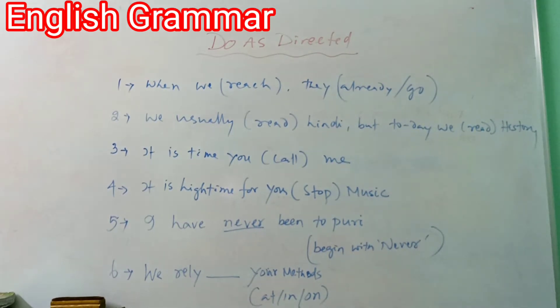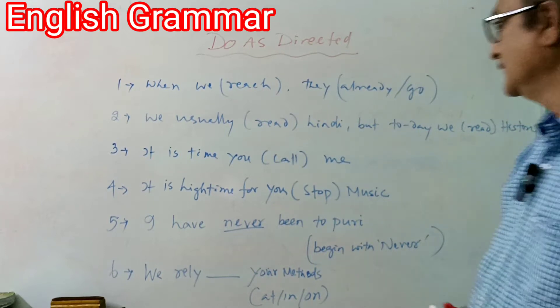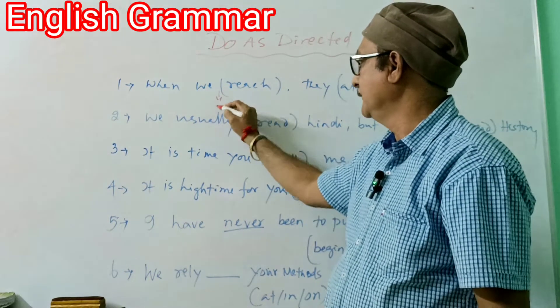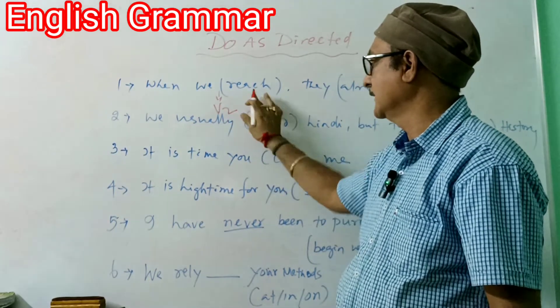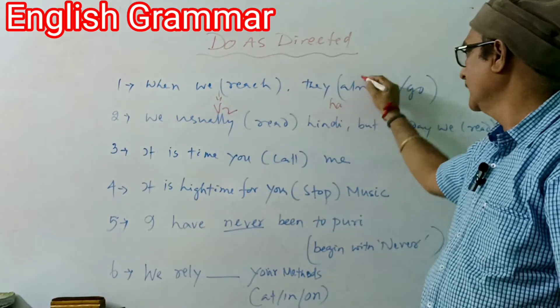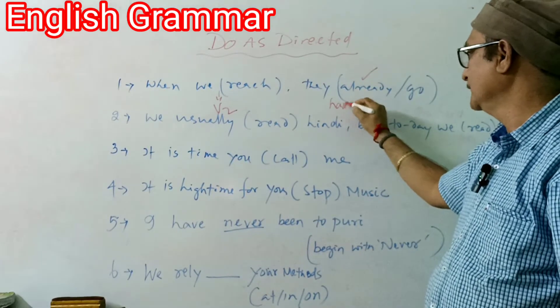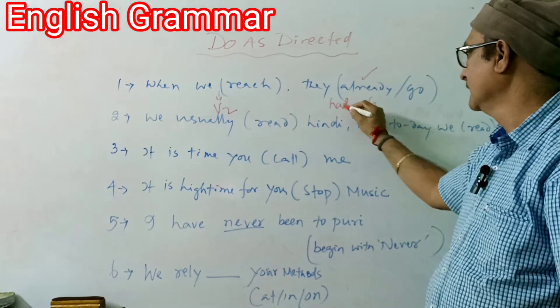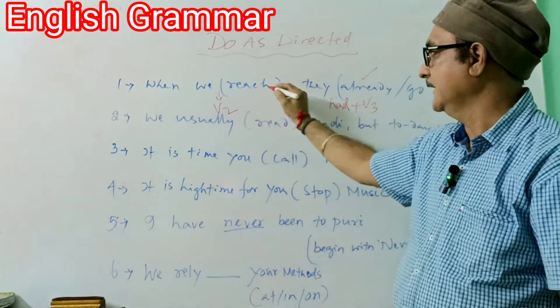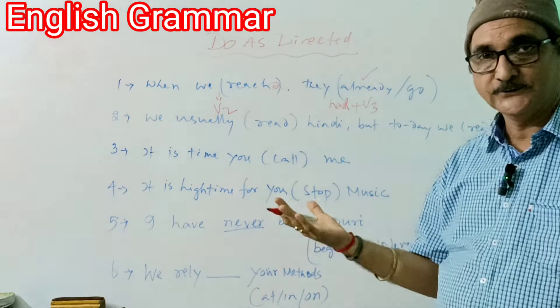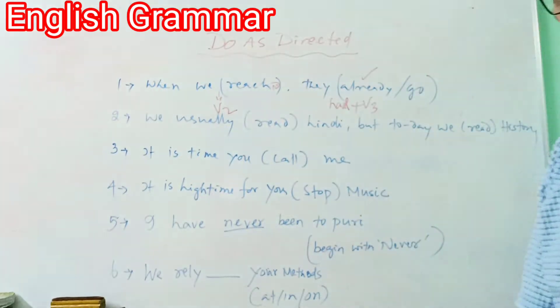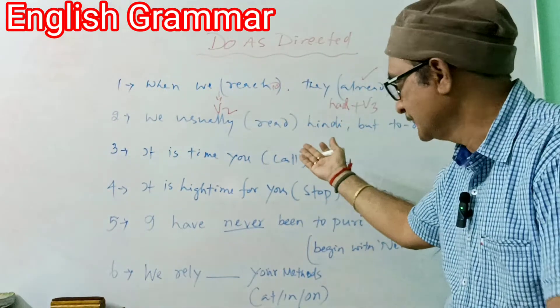When we reach, they already go means they had already gone. Right? Either you can write like this in past, or in present: when we reach, they have already gone. So think, one side you have to mention this side will be past V2 formula 'reached,' and this side 'already' is there, so you have to use had plus V3, so had already gone. And this side reached. That's the answer.